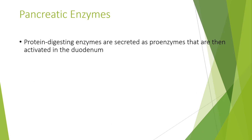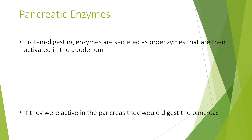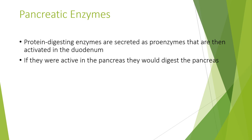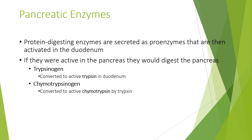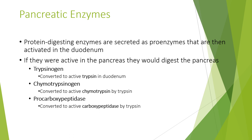Protein-digesting enzymes are secreted as proenzymes that are then activated in the duodenum — if they were active in the pancreas, they would digest the pancreas itself. Trypsinogen is converted to active trypsin in the duodenum. Chymotrypsinogen is converted to active chymotrypsin by trypsin. Procarboxypeptidase is converted to active carboxypeptidase by trypsin. Finally, proelastase is converted to active elastase by trypsin.